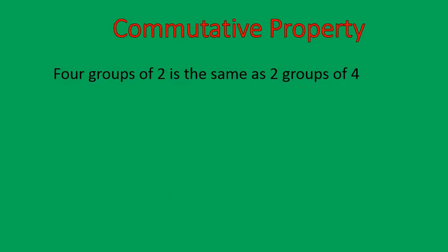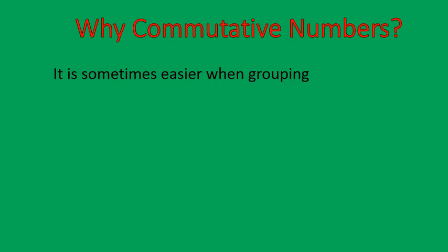With multiplication, we could say it like this: 4 groups of 2 is the same thing as 2 groups of 4. In other words, 4 times 2 is the same thing as 2 times 4 — they'll both give you 8. This is the commutative property. When you move numbers back and forth, you can use it with addition and multiplication. You might say, why would I ever commute a number? Why would I use the commutative property?